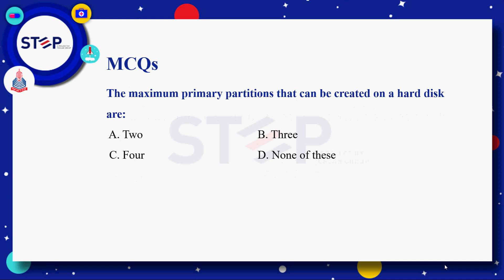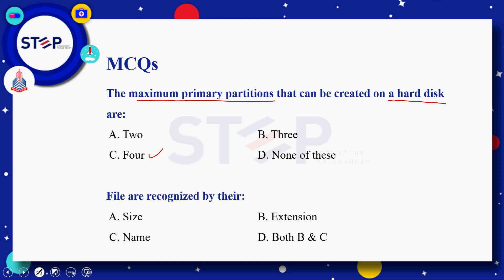MCQ: the maximum primary partitions that can be created on a hard disk — option A: 2، option B: 3، option C: 4، option D: none۔ ہمیں پتا ہے کہ ایک hard disk پر maximum 4 primary partitions create کر سکتے ہیں، تو correct answer C یعنی 4 بنتا ہے۔